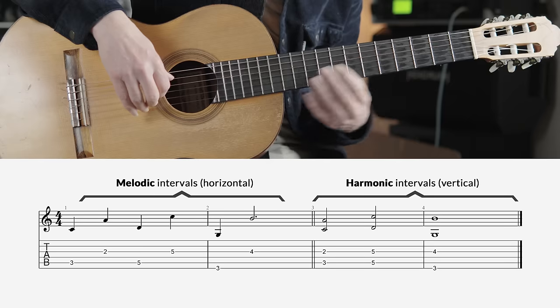Melodic intervals occur when two notes are played successively, and harmonic intervals occur when two notes are played at the same time, as happens in chords, for instance.